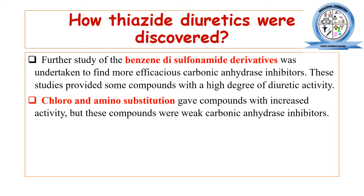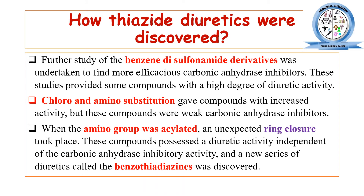The benzene disulfonamide derivatives, which are carbonic anhydrase inhibitors, when chloro and amino substitutions were made in their chemical structure, a new class of compounds was synthesized. These had weak carbonic anhydrase inhibitor activity but high diuretic activity — meaning a new mode of action. That class of compounds is basically the benzothiazide.